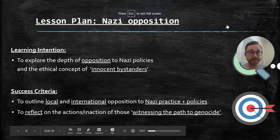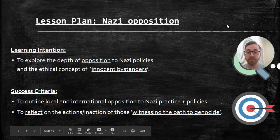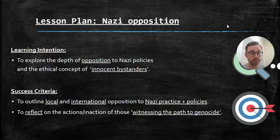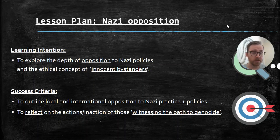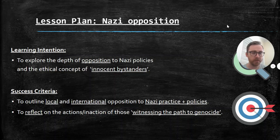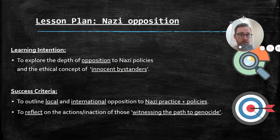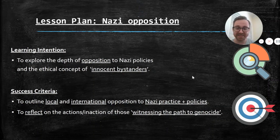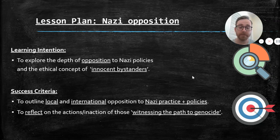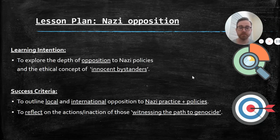The focus for today's lesson is Nazi opposition — basically exploring the depth of opposition to Nazi policies and the ethical concept of innocent bystanders. We're looking at who opposed Hitler, who resisted the Nazis, how much success they had, and should we be judging these people as guilty or innocent for not standing up to Hitler. We're outlining local and international opposition to Nazi practices and policies, and reflecting on the actions or lack of action of those who witnessed the path to genocide, the Holocaust, which is our next topic.